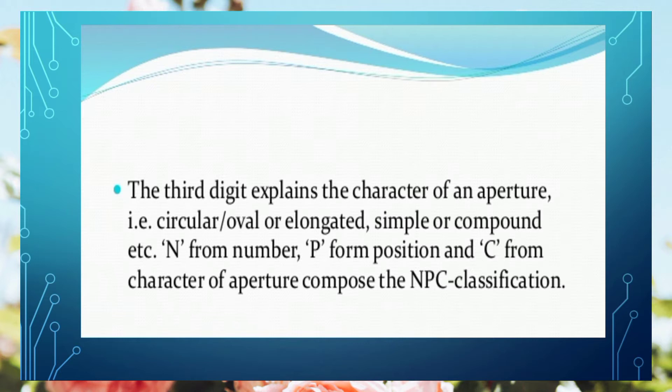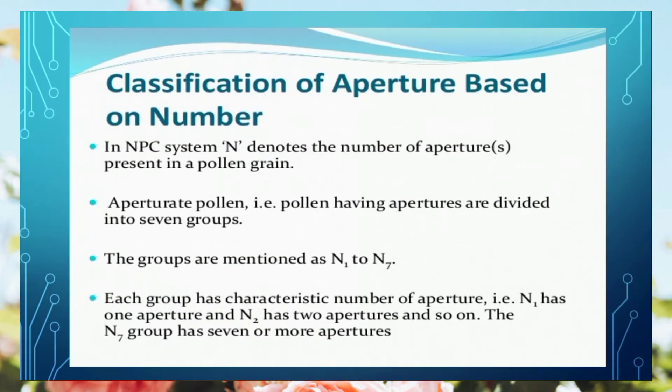So on this basis: N for number of aperture, P for position of aperture, C for character of aperture — on this basis our NPC classification system is composed.